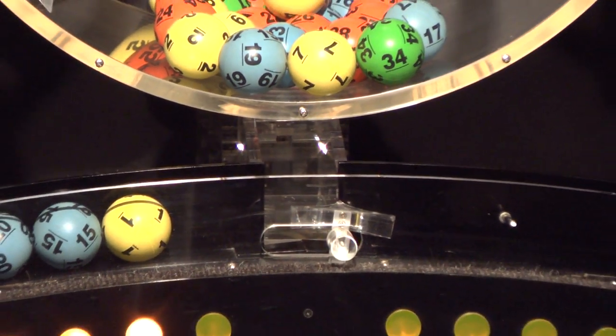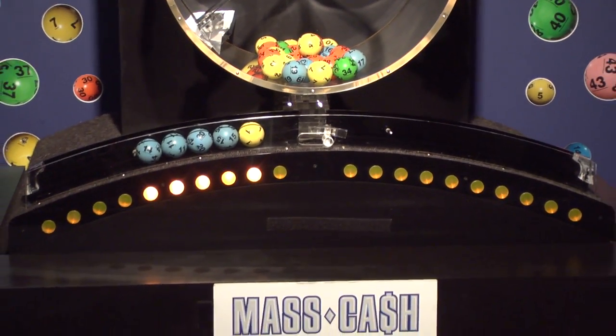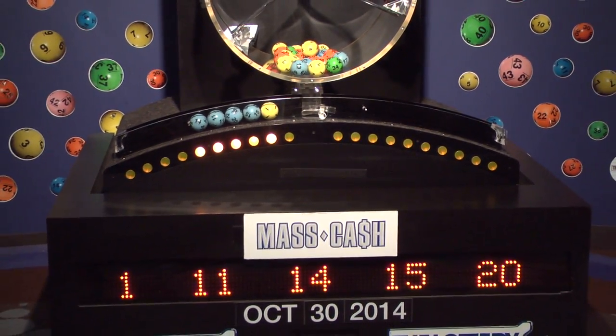Once again, the winning Mass Cash numbers for Thursday, October 30th, are 1, 11, 14, 15, and 20.